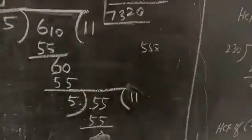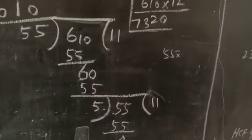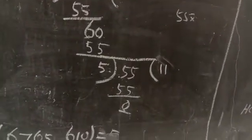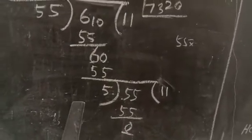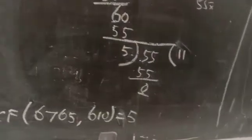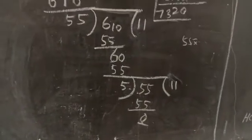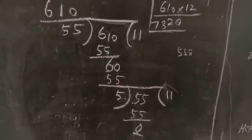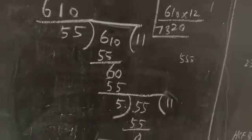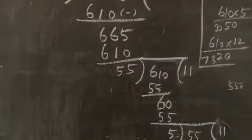The remainder is 0 when 5 is a divisor of the division. When the remainder is 0 when 5 is a divisor, therefore, HCF of 6765 and 610 is equal to 5. Listen, in repeated division, the remainder comes to 0. That division which one have a divisor, that is the HCF of given two numbers.